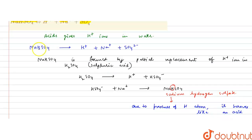On dissolution in water, it gives H plus ions according to this equation. Because it is formed by the partial replacement of the sulfuric acid and it is having H positive hydrogen atom in it, so it behaves like an acid.